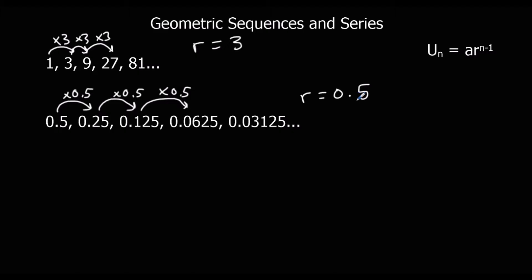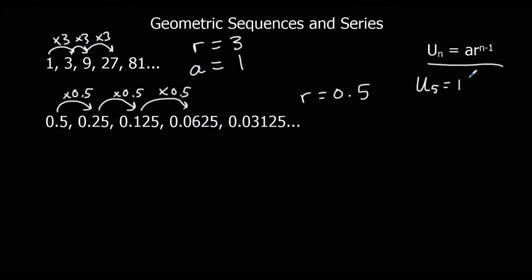The nth term of a geometric sequence is: u_n equals a, the first term, multiplied by the common ratio to the power of n minus 1. So if I wanted the fifth term of the first sequence, u5 is a, where a is the first term, so a is 1. So we've got 1 multiplied by r, which is 3, to the power of n minus 1. If it's the fifth term, 5 minus 1 is 4. And 1 times 3 to the power of 4 is 81.